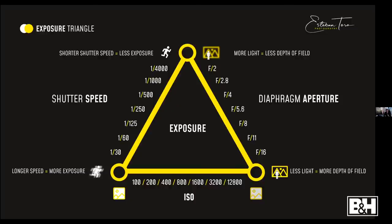If you understand that depending on the shutter speed you can freeze the image or have motion blur, you're on the right track. If you understand that a wider aperture lets in more light but gives you a blurrier background, and closing the aperture gives a sharper background with less light — you're all good. The same applies to ISO: lower ISO like 100 or 200 has less noise but less sensitivity to light, while higher ISO like 1200 or 2400 introduces noise from the pixels.